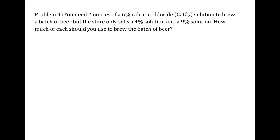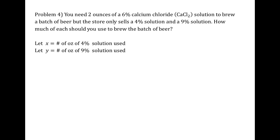The last example is similar to the third, using concentration of a solution. We need 2 ounces of a 6% calcium chloride solution to brew a batch of beer, but the store only sells 4% and 9% solutions. We need to mix those to get 2 ounces of a 6% solution. We define x as ounces of the 4% solution and y as ounces of the 9% solution. The constraint is x plus y equals 2.